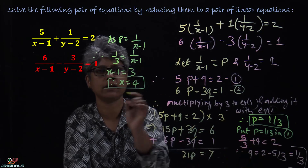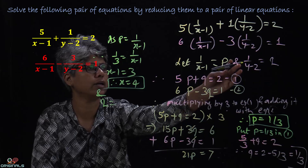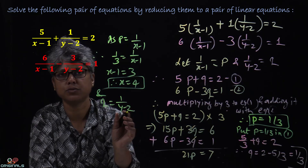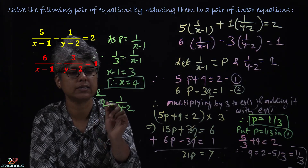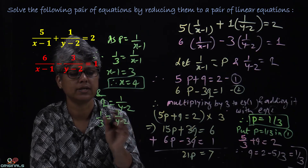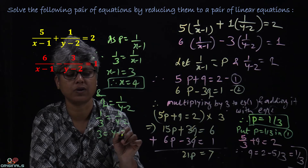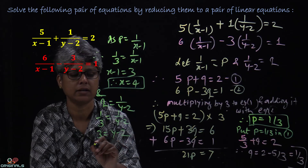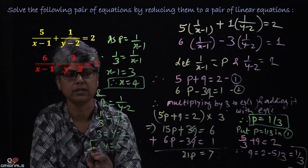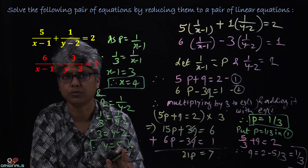And Q is equal to 1 upon (y minus 2), and Q also equals 1/3. So 1/3 = 1 upon (y minus 2). Cross-multiplying, 3 = y minus 2, therefore y = 5. So the final answer is x equal to 4 and y equal to 5.